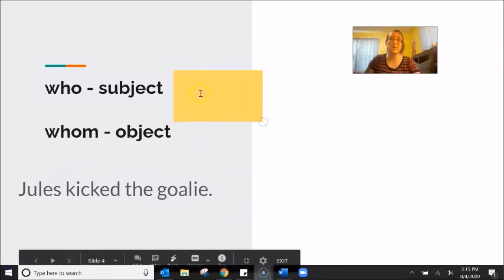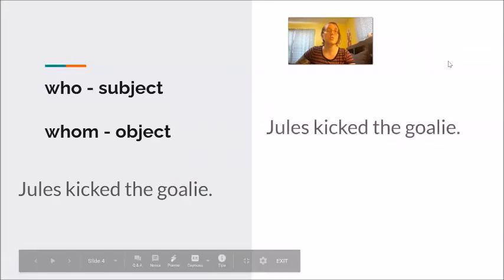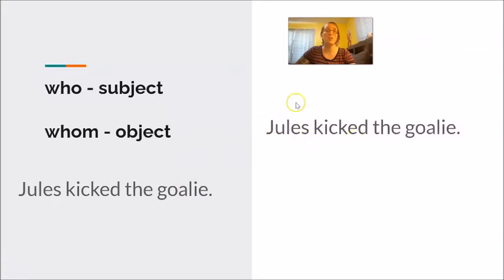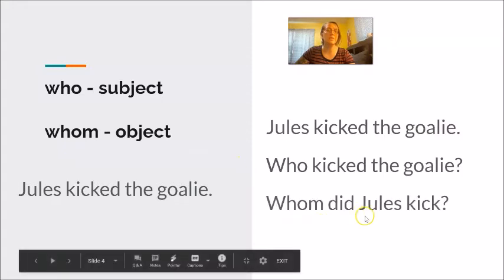Again — subject: who does the action. Who does the kick? Jules. Object: who gets the action. Who gets the kick? The goalie. Let's think about this then for who and whom. Jules kicked the goalie. If I take away the word Jules, I take away the subject, and I will put in the word who. Who kicked the goalie? If I take away the object — goalie — then I need to put in the word whom. Whom did Jules kick?